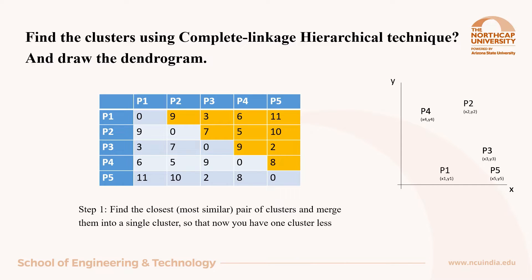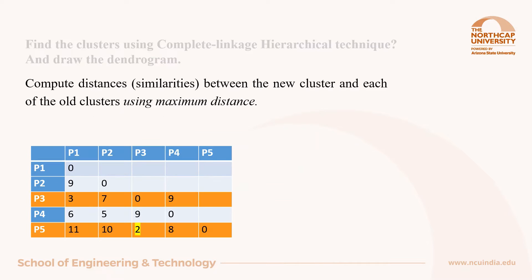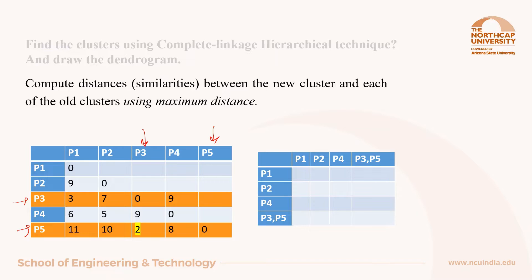The very first step is to find the closest pair of clusters and the shortest distance in the matrix. You can see 2 here, which is between point P3 and P5. So the very first cluster will contain these two points. Now let us merge the two points or clusters P3 and P5 and formulate the new matrix, which will be of size 4 by 4.